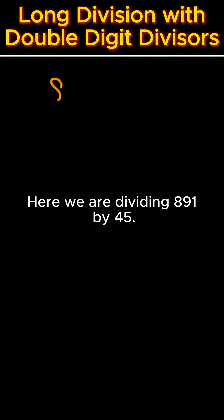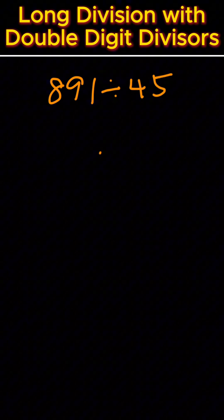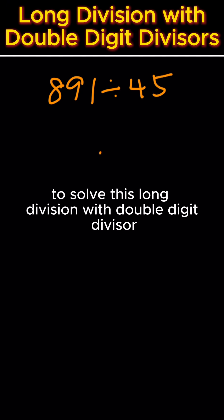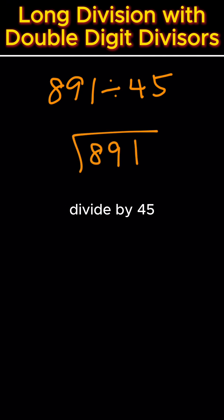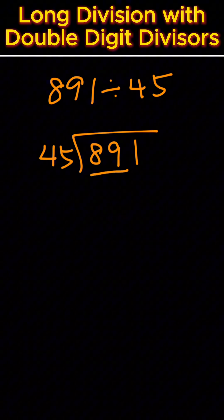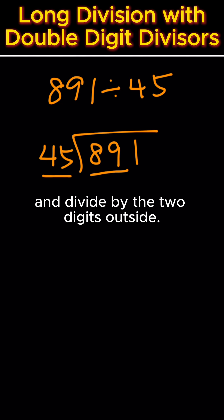Here we are dividing eight hundred and ninety-one by forty-five. To solve this long division with double-digit divisor, we will take 891 divided by 45, and the first step we want to do is take the first two digits and divide by the two digits outside.